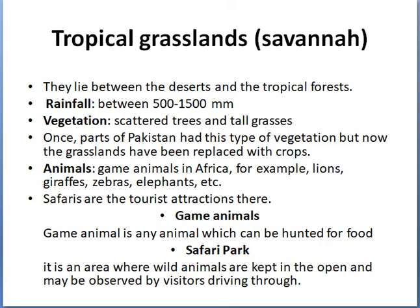The next region is tropical grasslands, also called Savanna. These regions lie between the deserts and the tropical forests. The rainfall varies between 500 to 1,500 millimeters. Vegetation consists of scattered trees and tall grasses. Once, parts of Pakistan had this type of vegetation, but now the grasslands have been replaced with crops. Animals found there are game animals in Africa — for example, lions, giraffes, zebras, and elephants. Safaris are a tourist attraction in these regions.